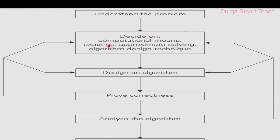This is the pictorial representation of fundamentals of algorithm problem solving. The same steps are involved: understanding the problem, determining the desired computational means, whether the algorithm gives exact or approximate output, designing an algorithm, proving correctness, analyzing, and coding. The arrows in the diagram represent iteration — if the algorithm is not correct, we return to computational means and redesign. If after analysis it is less efficient, we again restart from computational means.